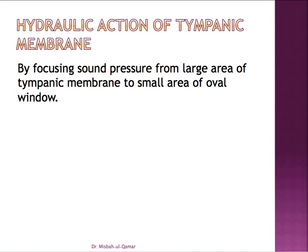The total effective area of the tympanic membrane is around 45 square millimeters, while the area of the footplate of the stapes is only around 3 to 3.2 square millimeters. The average ratio becomes 21 to 1. However, the effective vibratory area of the tympanic membrane is only two-thirds, so the effective areal ratio is reduced to around 14 to 1.